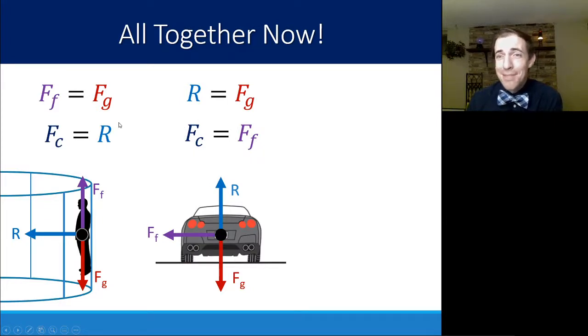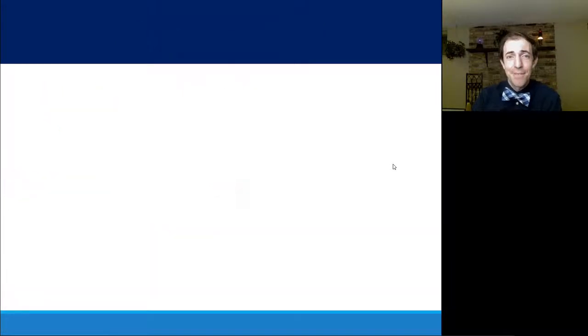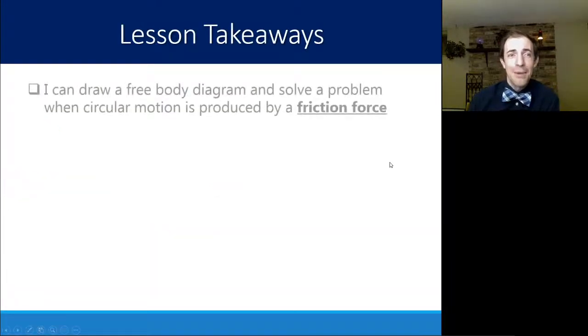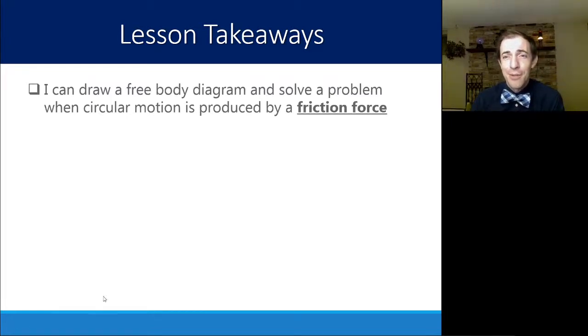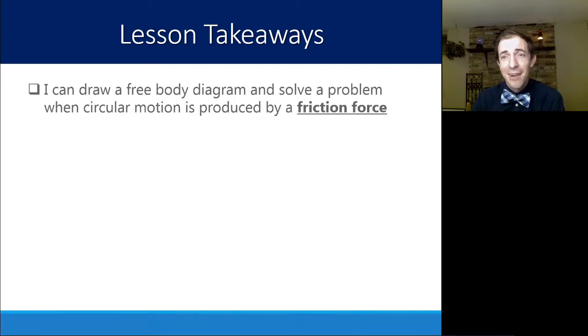If you know these mini-equalities, you will be able to use the equations that are already in your data booklet to solve through any problem dealing with these two examples. So as a quick takeaway, you should be able to draw a free body diagram now and solve for a problem when circular motion is produced by the friction force. Ultimately, that friction force pushing towards the center, allowing you to move in a circle without sliding off the edge of the wall, or in this case, the road.